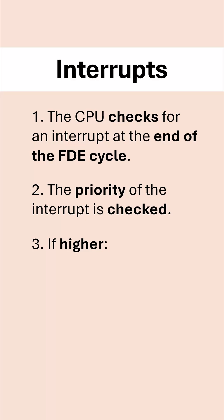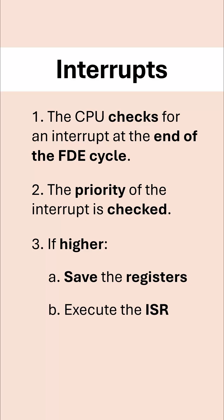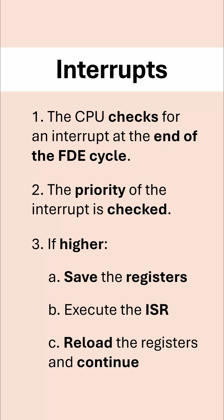Assuming the interrupt is quite important, we want to first save the contents of the registers to an area of memory called the stack. We then execute the relevant ISR. And then lastly, we need to reload the registers by popping the stack to continue with what we were doing before the interrupt occurred.